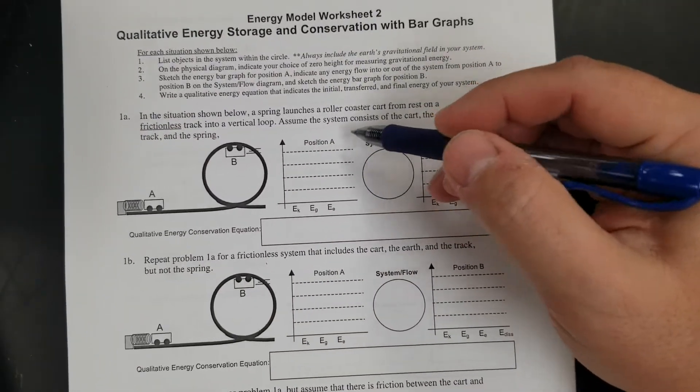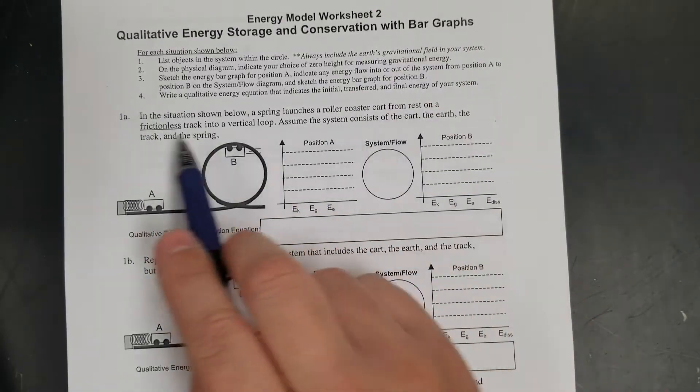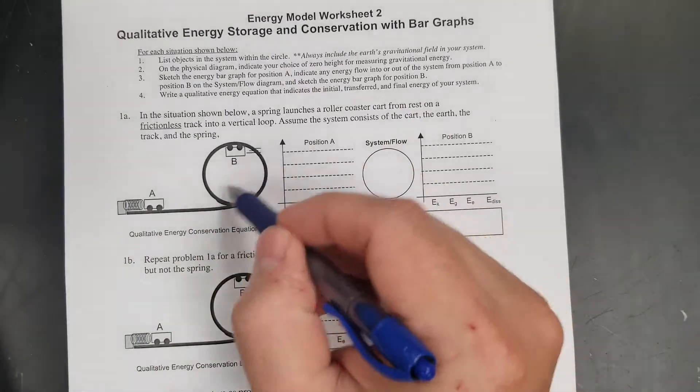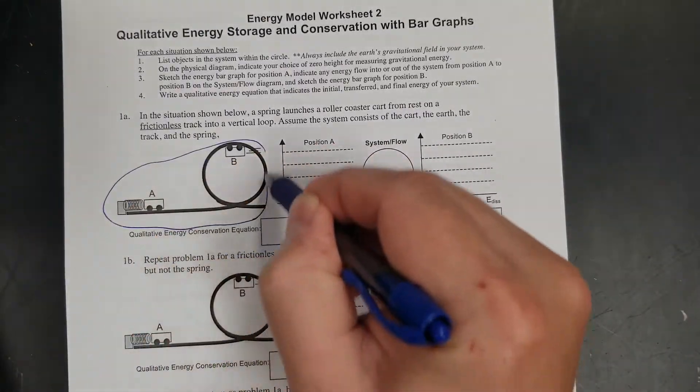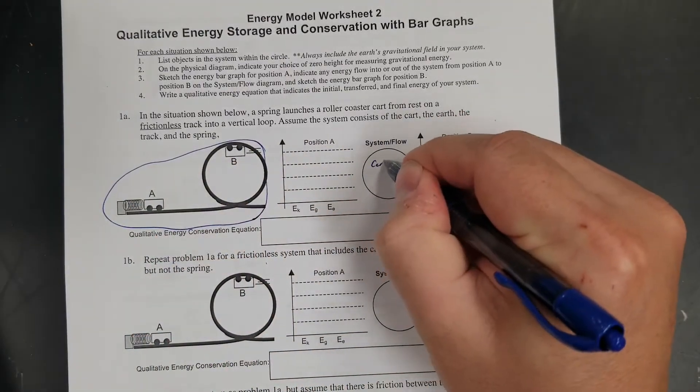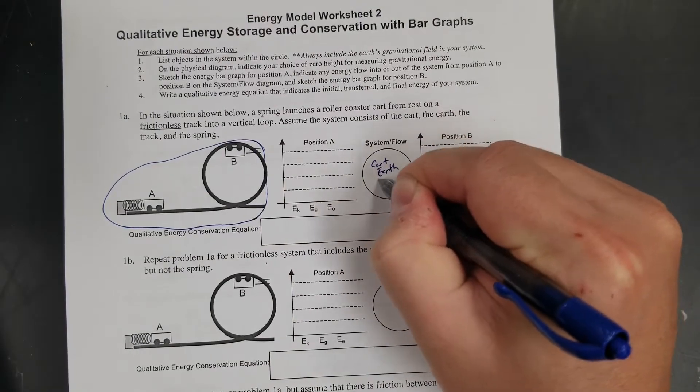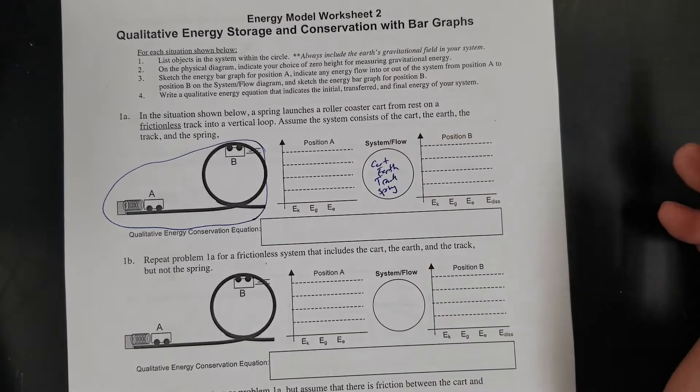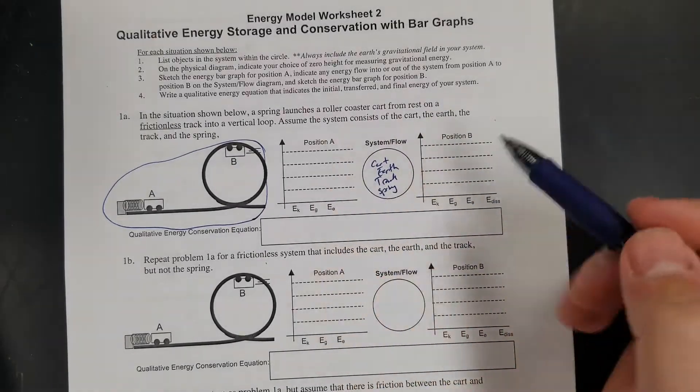This is a really basic example. Spring launches a cart close to rest. Assume the system is the cart, the earth, the track, and the spring. Everything is in my system: cart, earth, track, spring. Let's do the graph first.